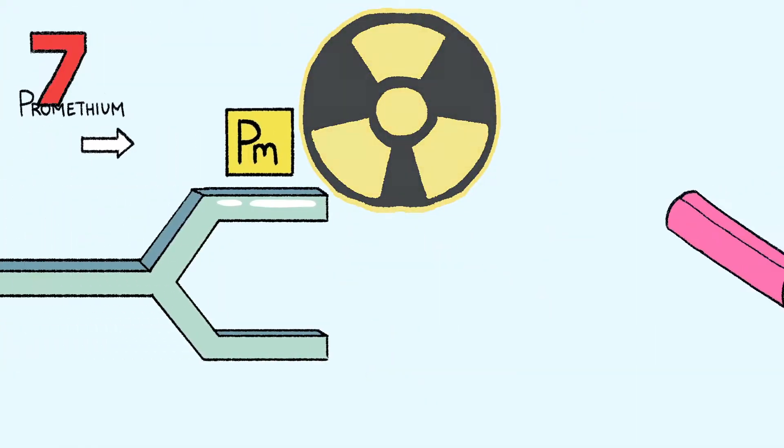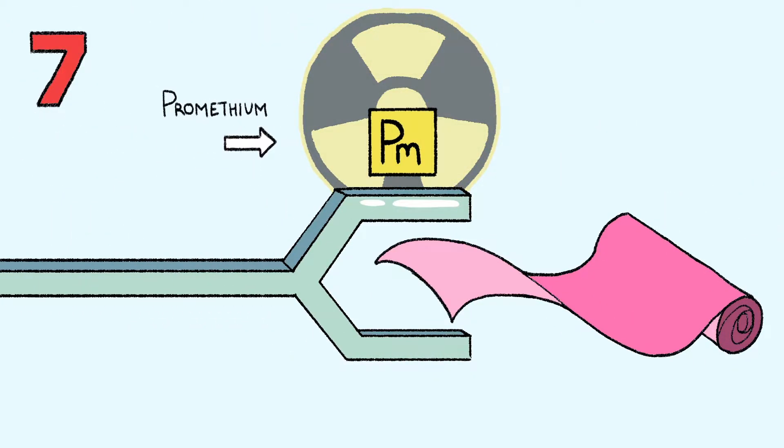Promethium is the only rare earth element that's radioactive. Its beta emissions are used to precisely measure the thickness of thin coatings like metal, plastic, or paint.